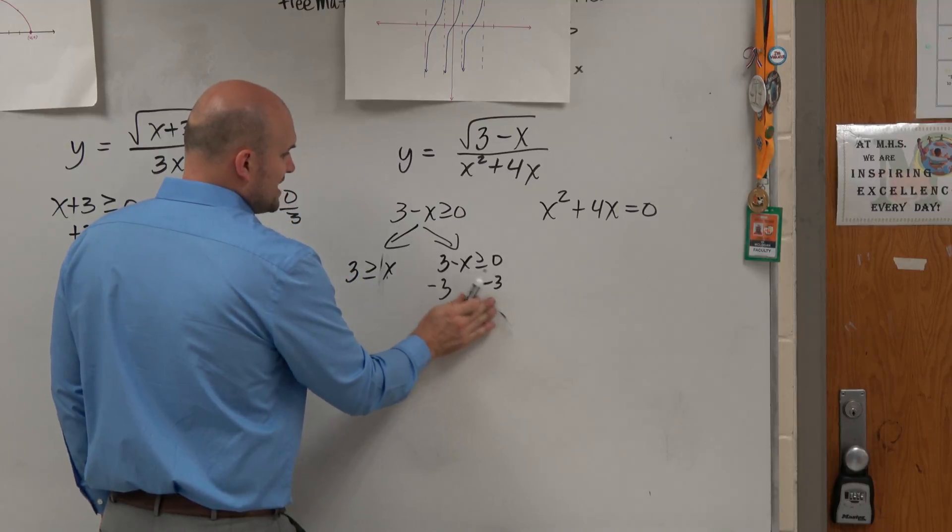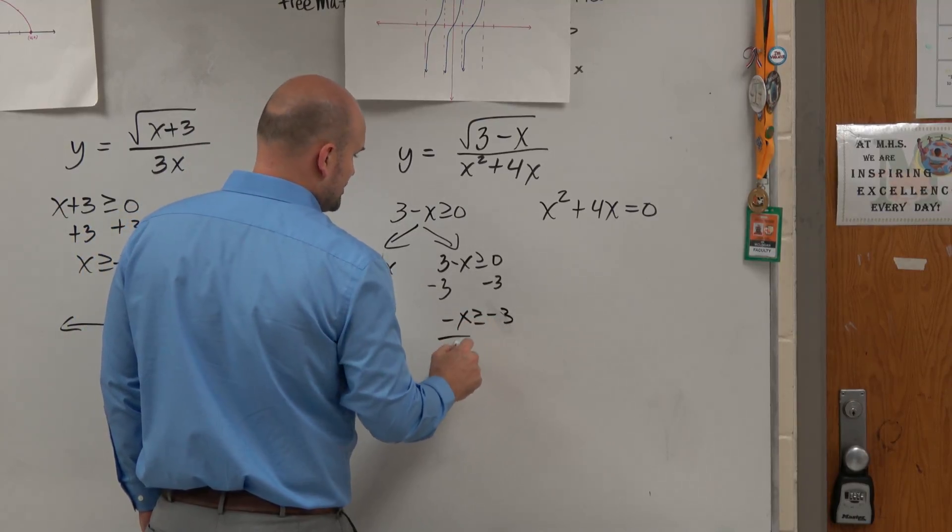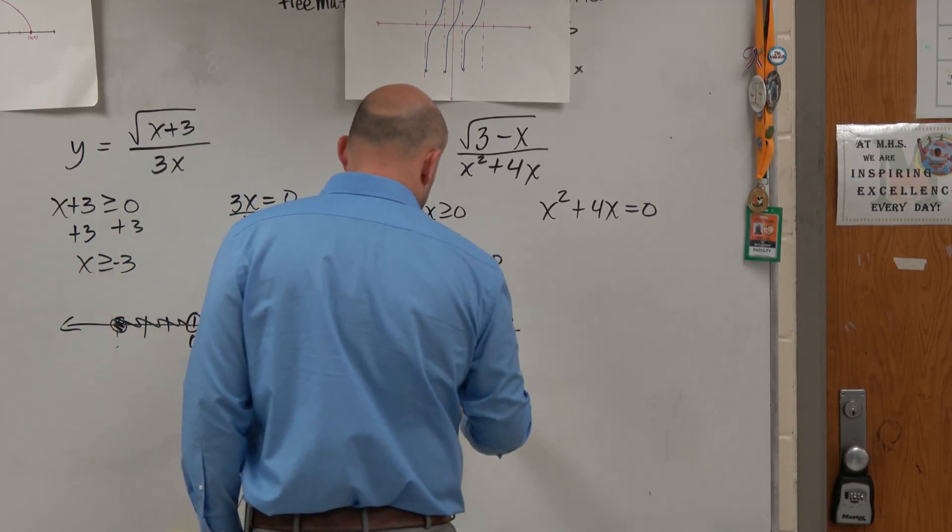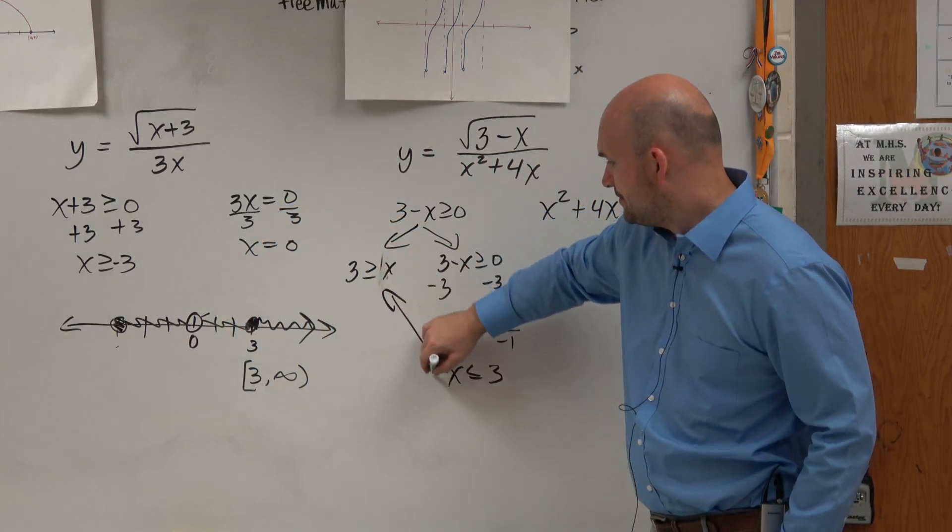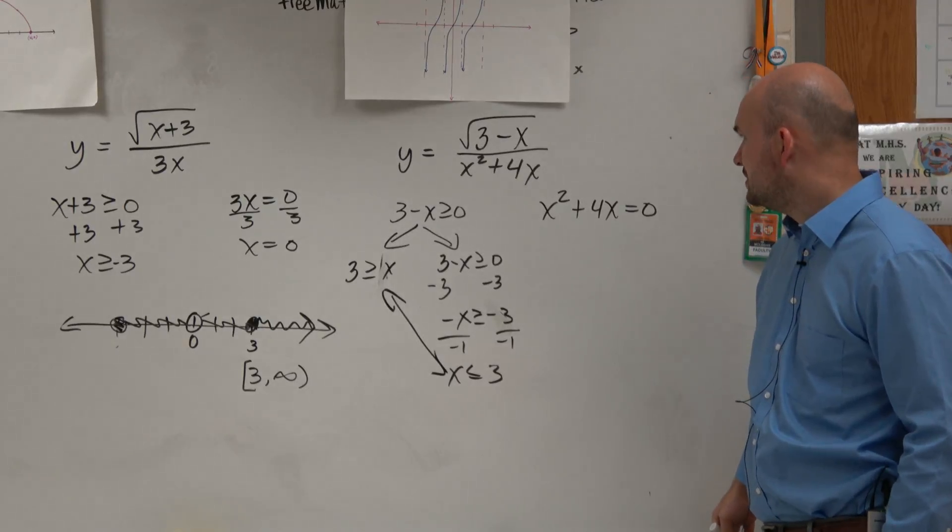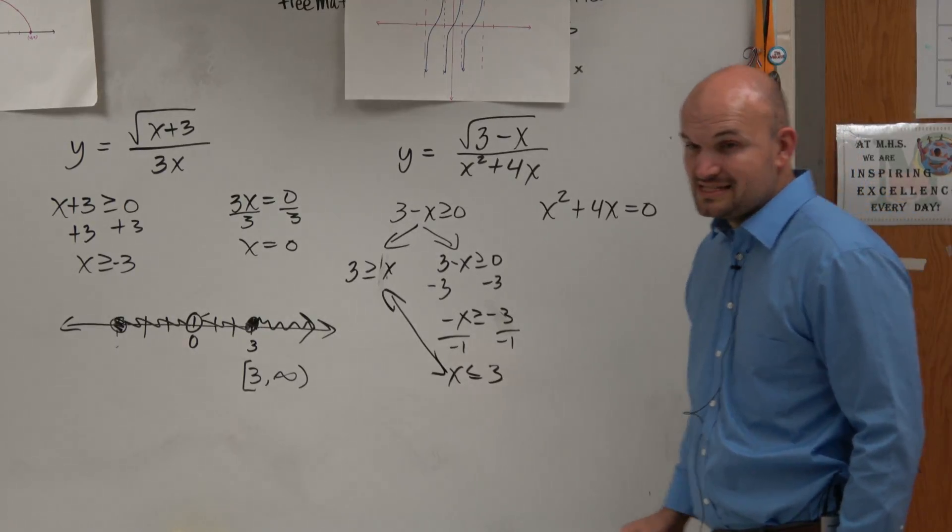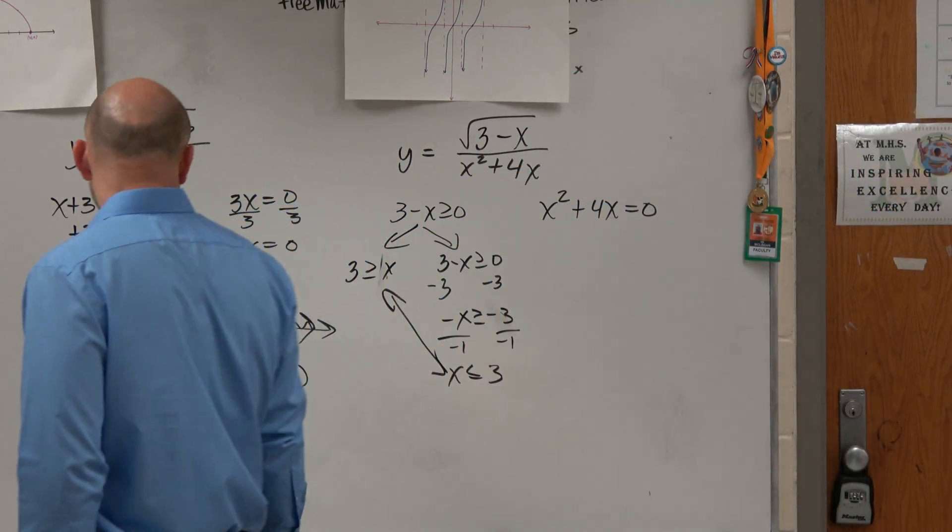And again, if you're going to use inverse operations, just make sure when you multiply or divide by a negative number, you understand that you have to flip the sign. You can see that these are exactly the same. So that means x has to be less than positive 3.